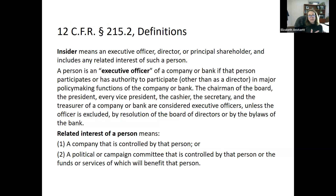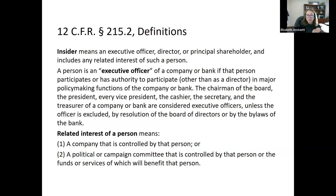To clarify definitions: an insider is an officer, director, or principal shareholder, or any related interest. An executive is one who really participates in policymaking — things like the president or vice president. Roles like cashier, secretary, and treasurer depend on how a bank is operated; sometimes a treasurer is a bookkeeping-type role, sometimes it's a policymaking role. A related interest is a company of a person or a political campaign.